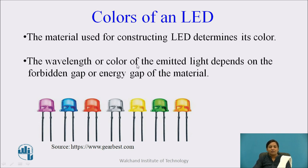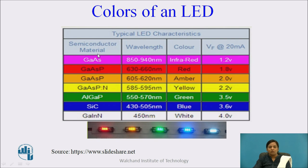Colors of LED: the material used for constructing LED determines its color. The wavelength or color of the emitted light depends on the forbidden gap or energy gap of the material. If gallium arsenide is used, then that LED will emit infrared. If gallium arsenide phosphide is used, then that LED will emit red light or green light. If gallium arsenide phosphide is used, then that LED will emit blue light. If gallium indium nitride is used, then that LED will emit white light. In this way, for different combinations of these semiconductors, different colors of light are emitted by LED.